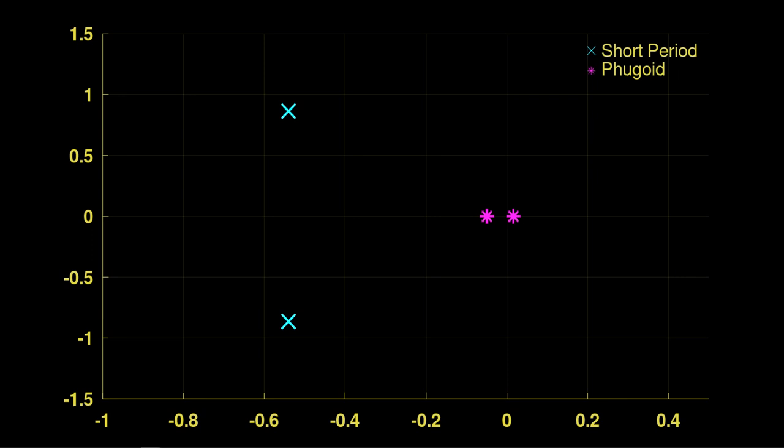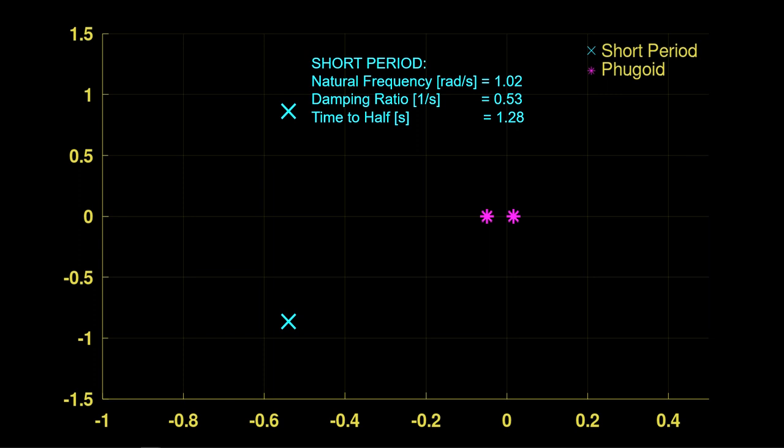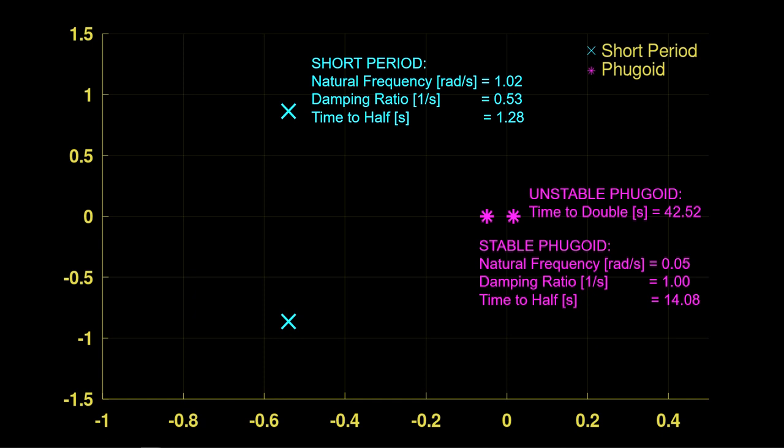The linearized system is obtained about this trim condition. The pole-zero plot shows the short period has significant damping, with a natural frequency of 1.02 radians per second or 0.16 hertz. The phugoid is non-conventional as a pure real pair with one unstable pole. The instability is not a major concern though, as it is very slow with a time to double of over 42 seconds. This unstable phugoid will be corrected with feedback control.